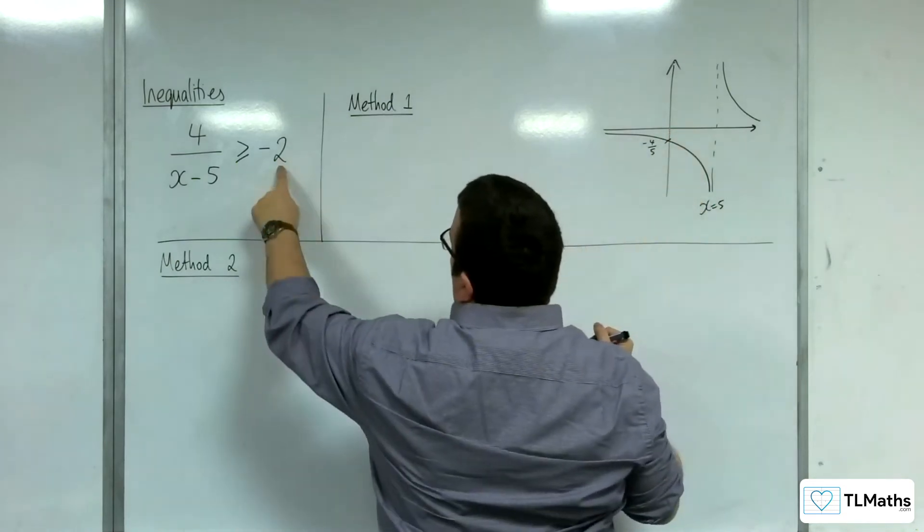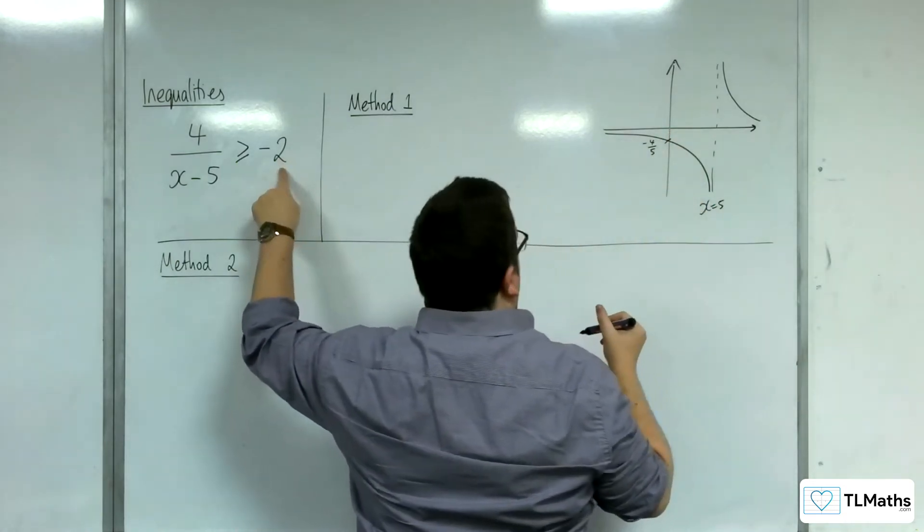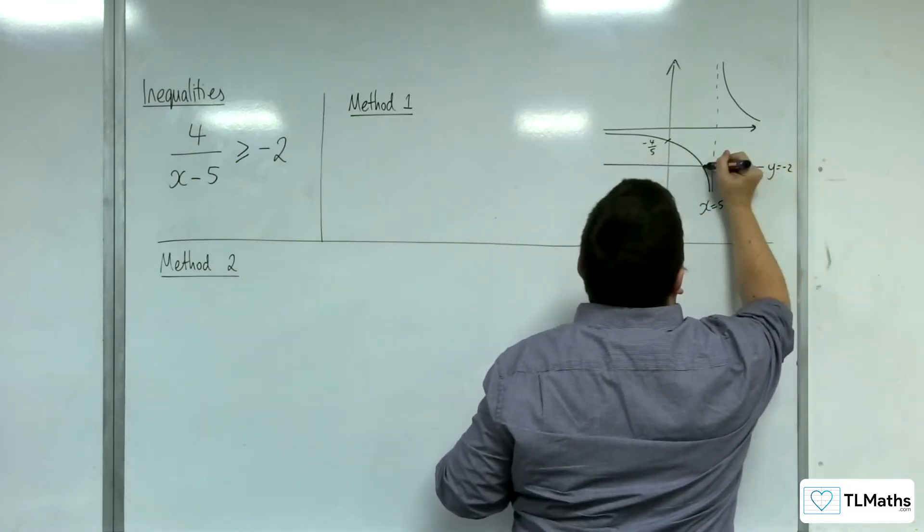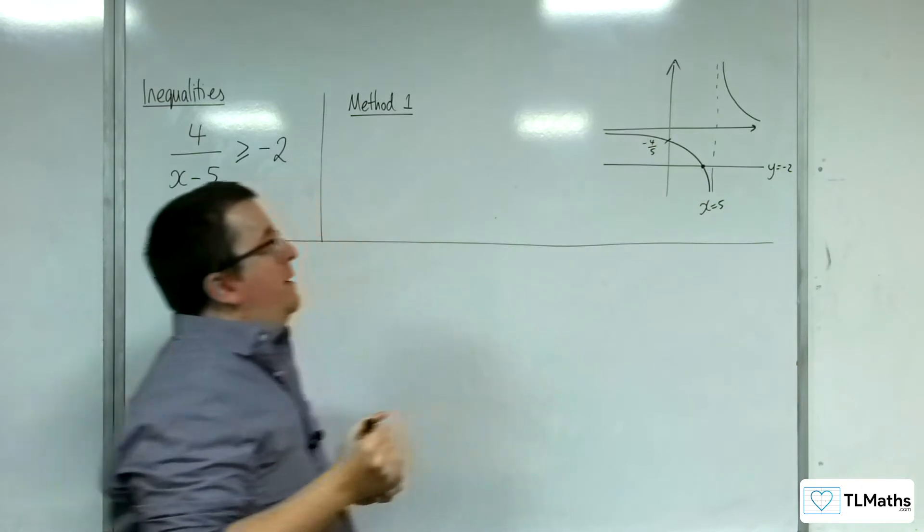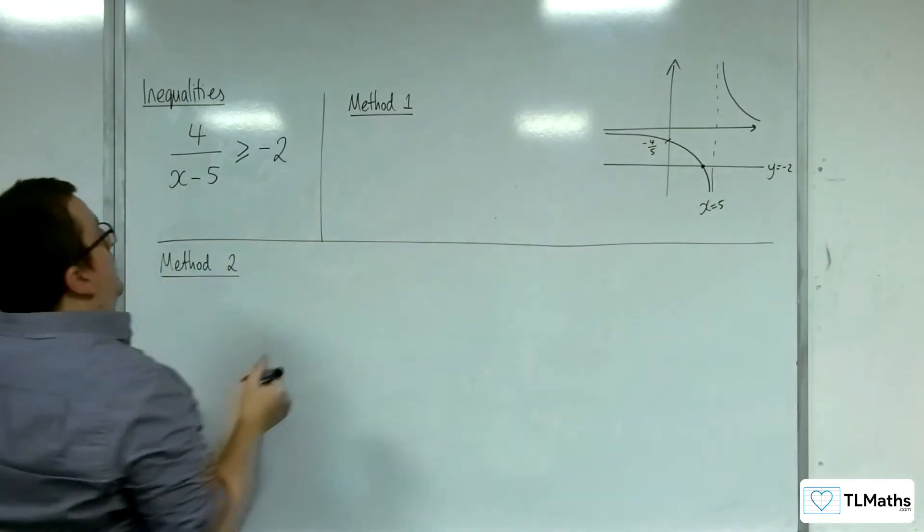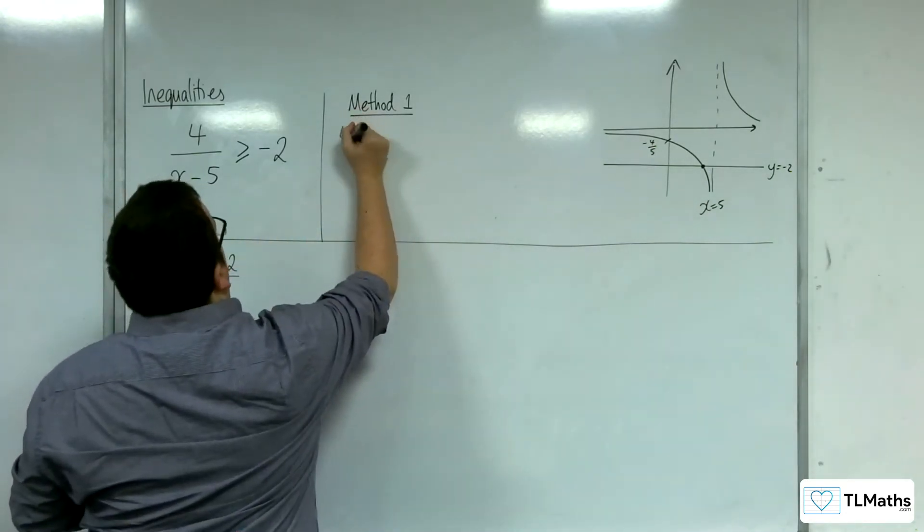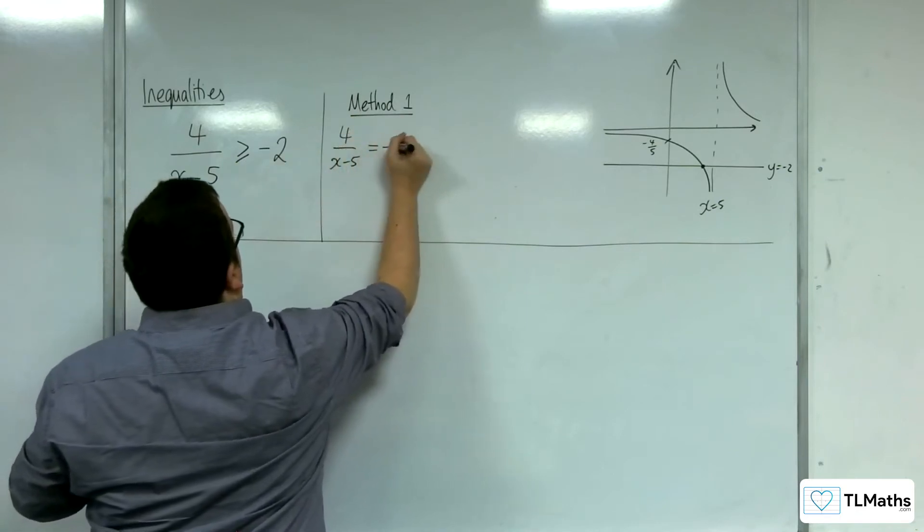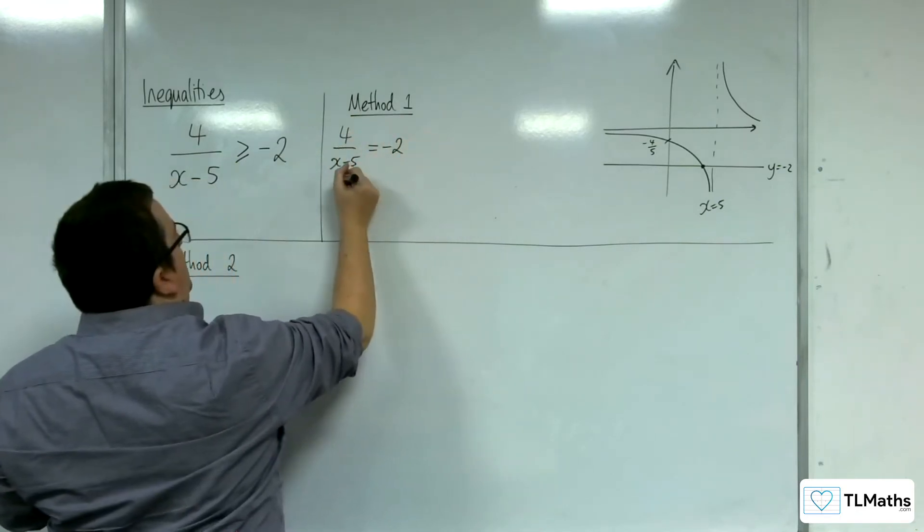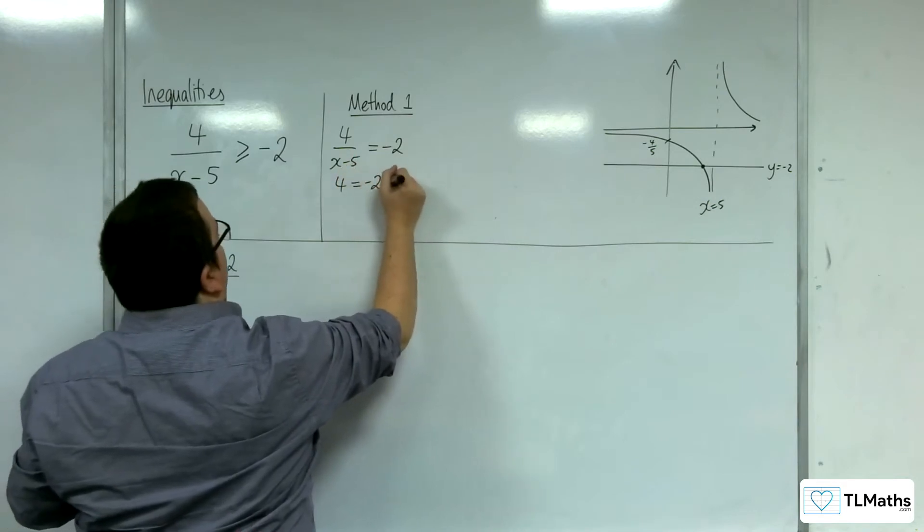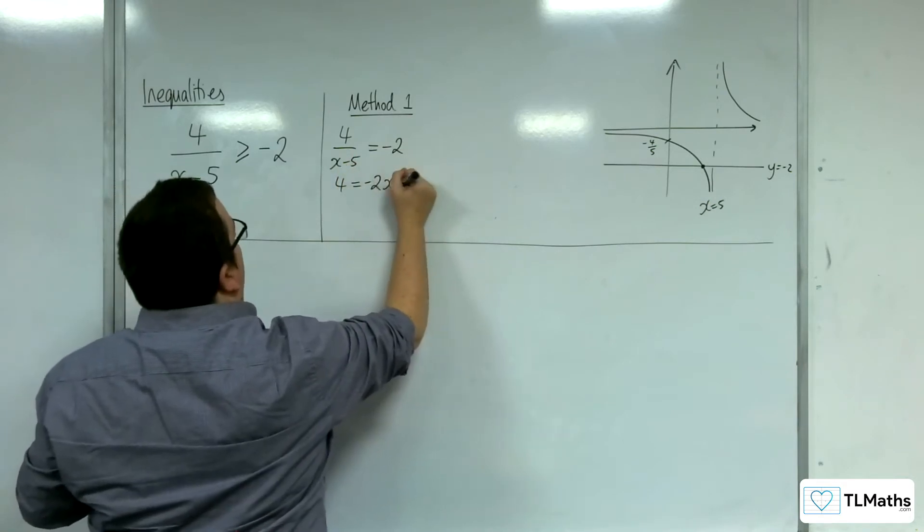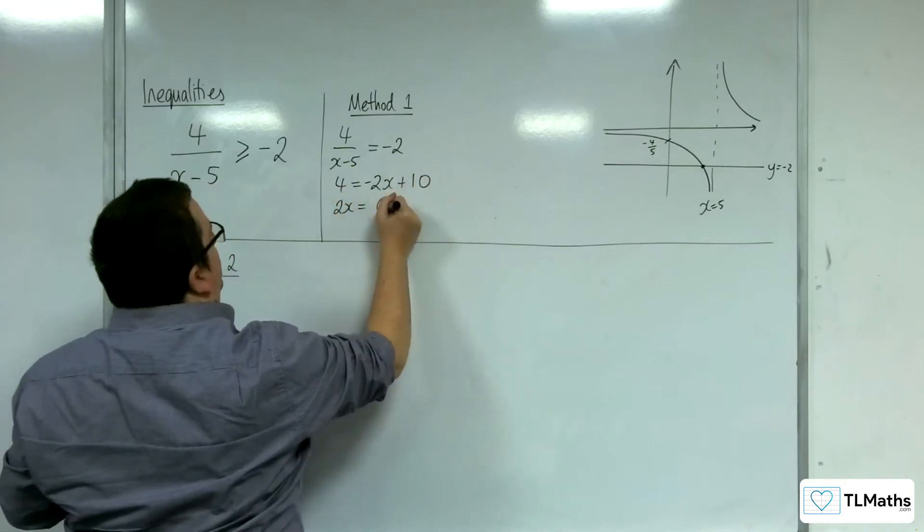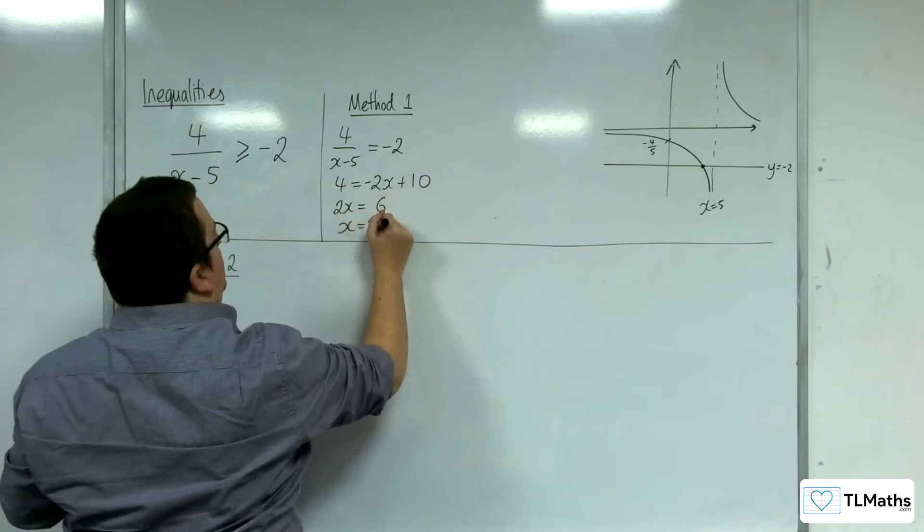And we're looking at y equals minus 2. So I'm interested in finding that point of intersection. So if I multiply, so if I treat it like an equation and multiply it by the x minus 5, so minus 2x plus 10. So we're going to get 2x is equal to 6, so x must be equal to 3.